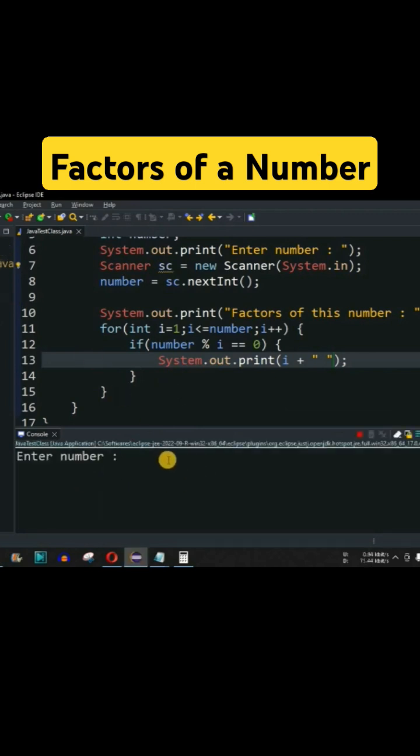Let me run this code once again. We'll check another example. Let's say 49 is the number. When we press enter, as you can see, 1 can divide 49, 7 can divide 49, since 7 multiplied by 7 is 49.